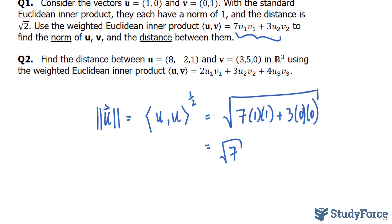We have to do the same thing again for v. Just like that. And using the weighted Euclidean inner product, we have 7 and 3. That part doesn't change.